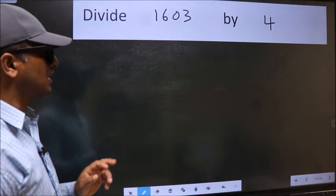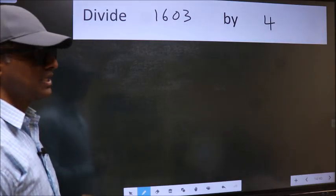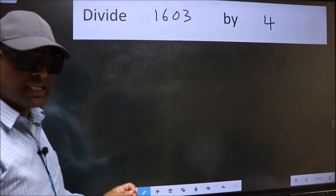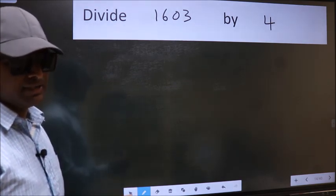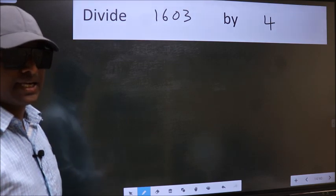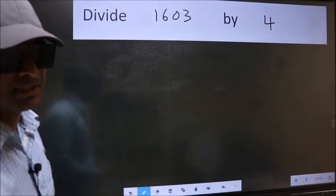Divide 1603 by 4. While doing this division, many do this mistake. What is the mistake that they do? I will let you know. But before that, we should frame it in this way.